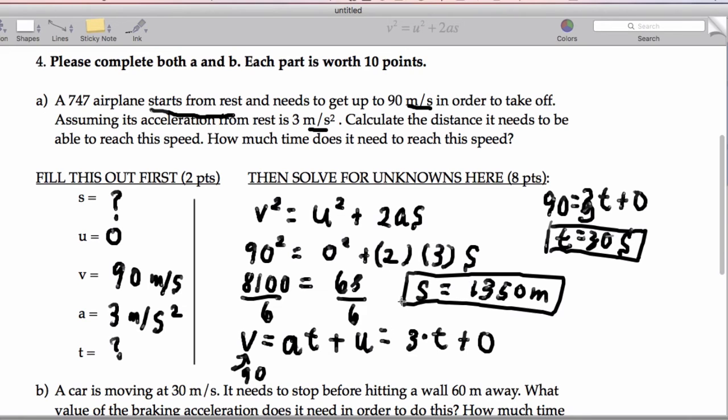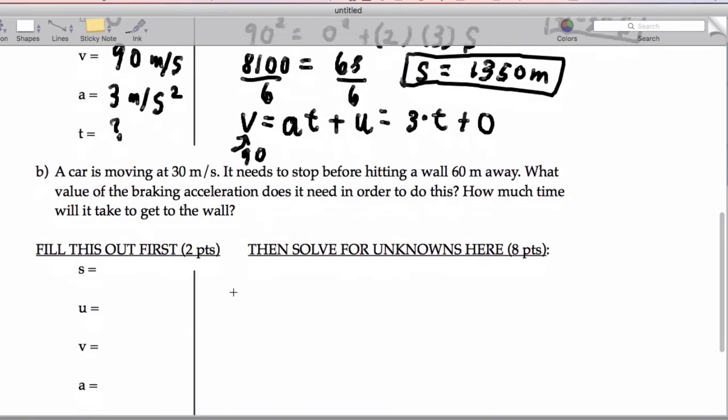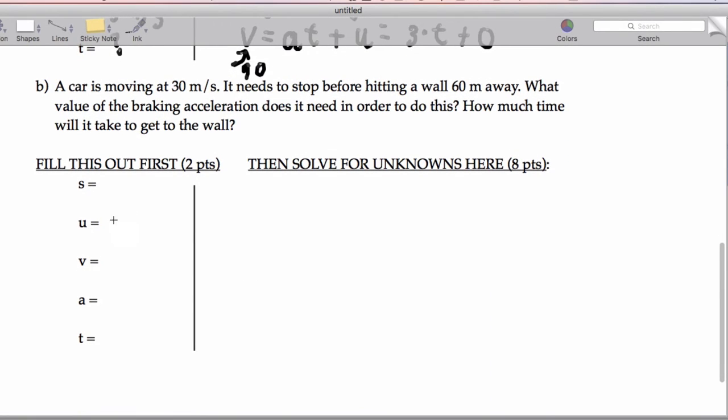For part b, we have a car moving at 30 meters per second, that's the initial velocity. It's going to stop, the wall it's going to hit is 60 meters away. We want to know the acceleration and we want to know the time. Let's first get the acceleration.